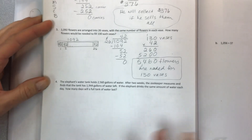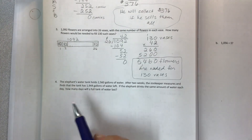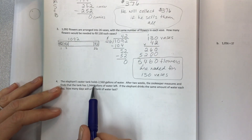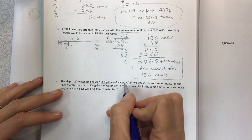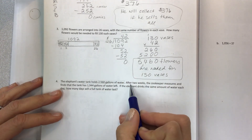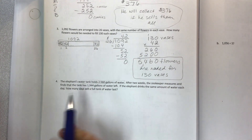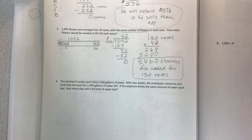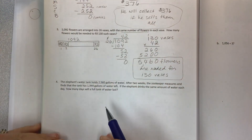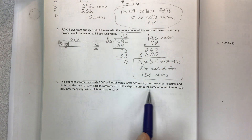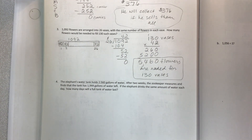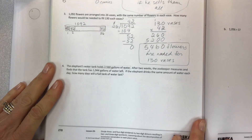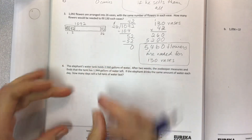Last one — a good one. The elephant's water tank holds 2,560 gallons of water — when they give you the total, think about your tape diagram. After two weeks the zookeeper measures and finds that the tank has 1,944 gallons of water left. If the elephant drinks the same amount of water each day, about how many days will a full tank of water last?